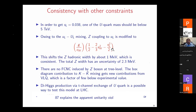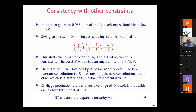When the up quark mixes with a vector-like up quark, it modifies the Z decay width into up quarks. The Z hadronic width shifts by about 1 MeV, consistent with the current experimental limit of about 2.3 MeV. There are no tree-level flavor-changing Z couplings, and loop-level box diagram contributions to K-K-bar mixing are an order of magnitude below experimental limits. An interesting possibility is di-Higgs production through t-channel exchange of vector-like quarks, which is being investigated in connection with the Cabibbo anomaly.